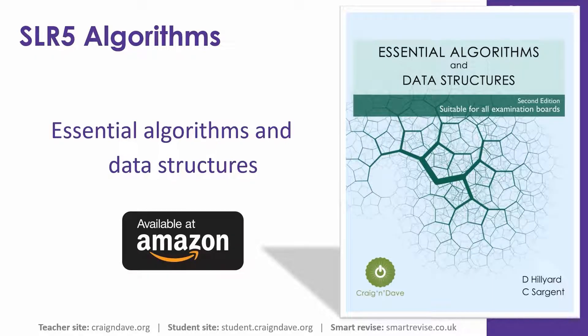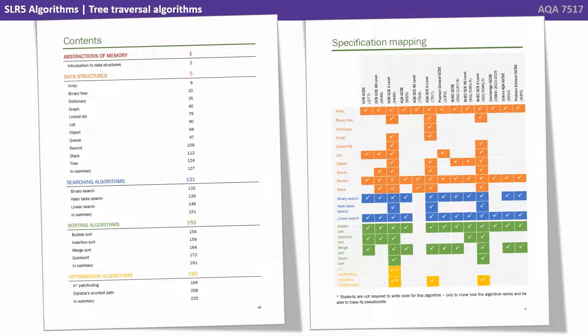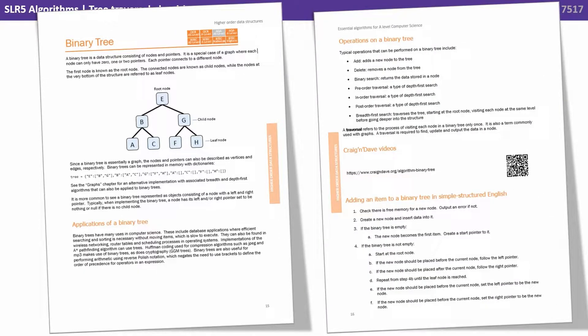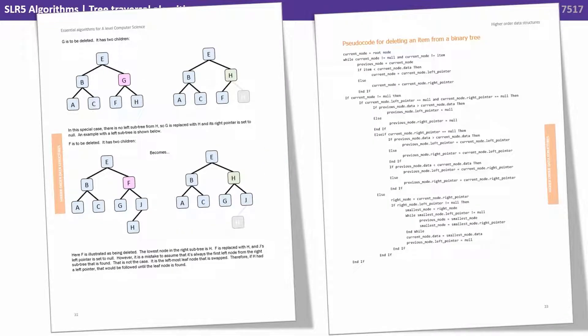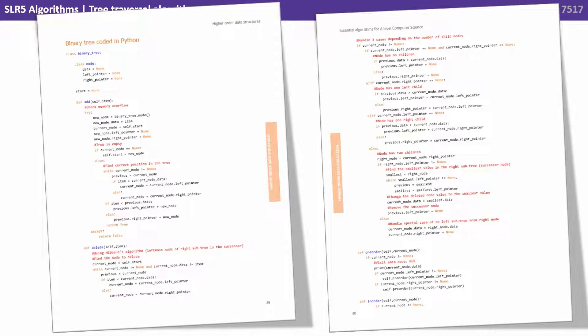Dave and I know that data structures and algorithms are one of the hardest areas of the course, and we've therefore written a dedicated book which is available to purchase on Amazon. The book covers all the data structures and algorithms you need to be aware of for the exam, with each one having its own dedicated chapter. The chapter overviews the data structure or algorithm, gives you applications, operations, links to our videos online, and goes over the algorithm in simple structured English, a visualisation, pseudocode, and is fully coded in Python, C-sharp, and Visual Basic.